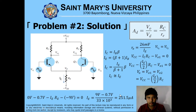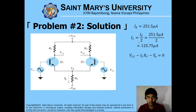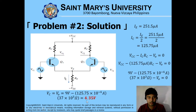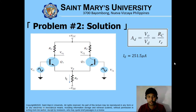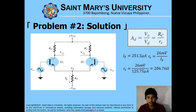However, in solving for the current gain, this IE should be divided by 2, since the small AC resistance at the emitter side has a current of IE divided by 2. Solving with that divided by 2 to find the output voltage: output voltage is now equivalent to 4.35. Solving for the AC voltage gain — equivalent to RC over RE — we divide the emitter current 251.5 microamperes by 2 to get 125.75 microamperes. So 26 millivolts divided by 125.75 microamperes equals 206.76 ohms, yielding an AC voltage gain of 178.95.